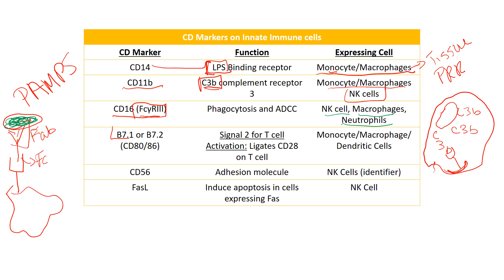B7-1 and B7-2 — also known as CD80 and CD86 — generally provide signal 2 for T cells because they ligate CD28 on the T cell, and they can also bind CTLA-4 to stop the immune response. These are expressed on antigen-presenting cells: monocytes, macrophages, and dendritic cells. Dendritic cells are particularly important here because as they mature, they move to the draining lymph node to provide that initial introduction to T cells and recruit them into the adaptive immune response — the priming phase. They need to have good B7-1, B7-2, CD80, and CD86 expression.